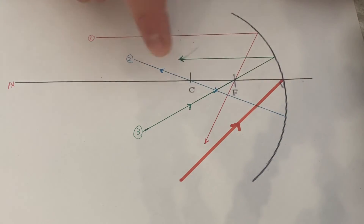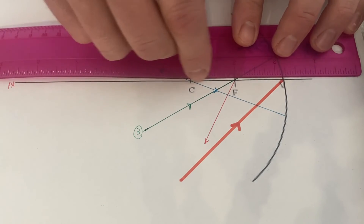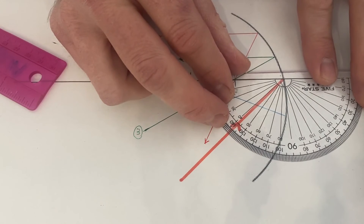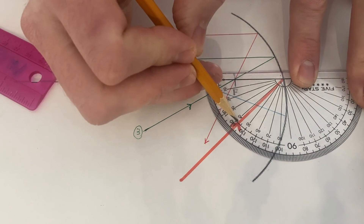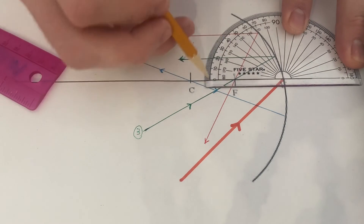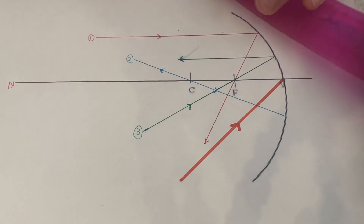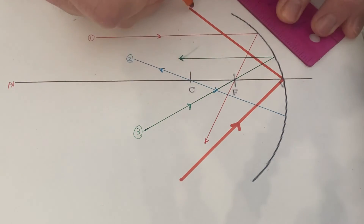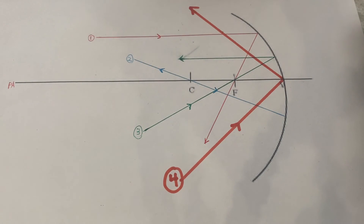That's why ray two went straight back — it was hitting at 90 degrees. So wherever the principal axis goes through the center of curvature and hits the mirror surface, it's always 90 degrees. That makes it easy to measure: the angle of incidence here is about 42.5 degrees, so I come back on the other side and measure about 42.5 degrees there as well, then draw the reflected ray.